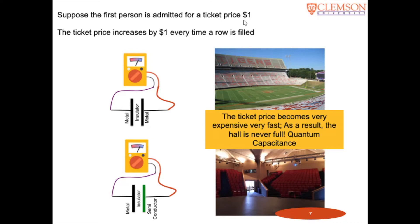So when you are taught capacitors, we usually teach about parallel plate capacitors with metal plates. So you can think of these metal plates like the Death Valley, but in case of carbon electrodes, these are not metals. They are at best semiconductors. For example, if you look at Death Valley, suppose the first person is admitted for a ticket price of one dollar and the ticket price increases every time one row is filled. So then if you assume that in the first row, some hundred people can sit here, then for all those hundred people, the ticket price would be one dollar. So you would get hundred dollars.